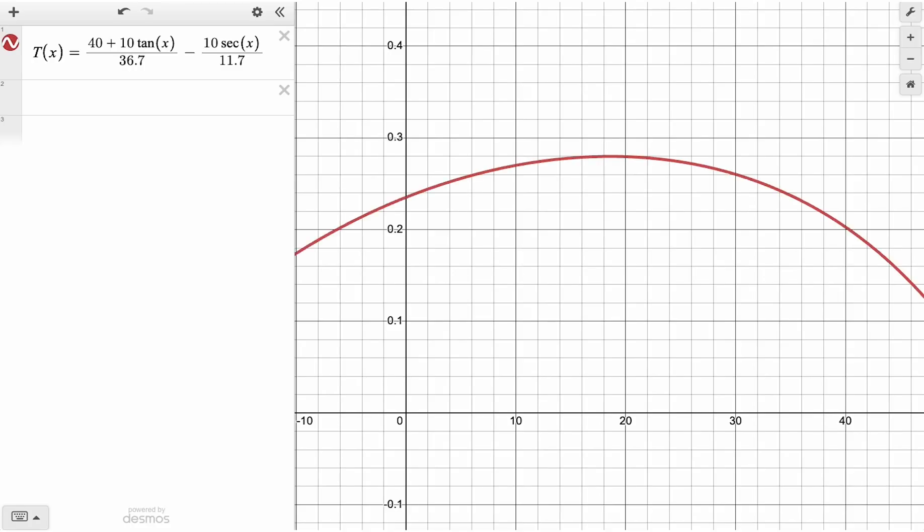Here's the graph. Remember, we're trying to find the angle that maximizes the safety time. That means we're looking for a maximum on this curve. This point here tells us that the optimal angle for Sarah is about 18.6 degrees, and that gives her a safety time of about 0.28 seconds. If she headed perpendicular to the curb, she would have about 0.24 seconds of safety time. So the optimal angle saves her less than 0.05 seconds.